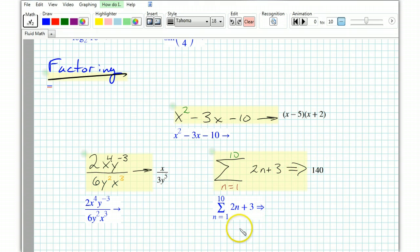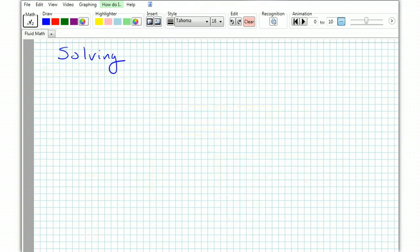Now let's get into some of the more powerful aspects of fluid math. It can actually solve equations. So if I have the equation 3x plus 2 equals 8, and I want to know what x is, I just draw an arrow, and x equals 2. And if I want to change that equation, I just change it and it automatically updates the answer.